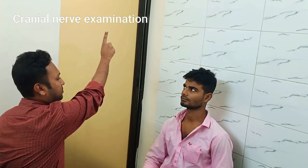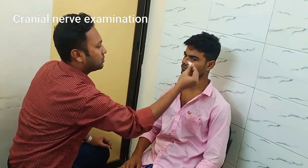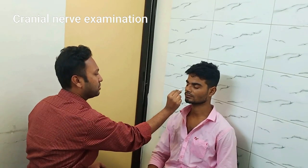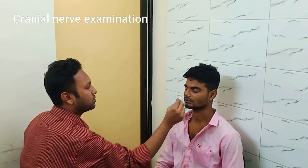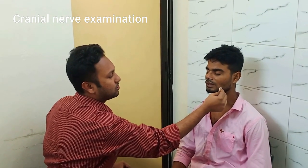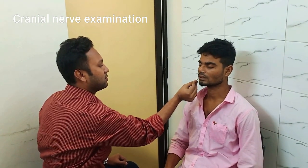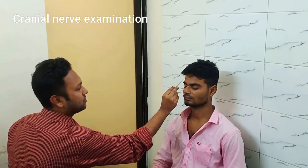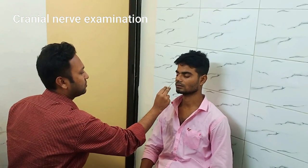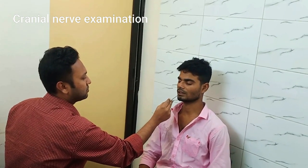This tests for ophthalmoplegia associated with third, fourth, and sixth cranial nerve palsy. Now sensation of the face along the trigeminal nerve distribution is tested — first for fine touch, then for crude touch. The patient is asked if he can feel any sensation or if he notices any reduced sensation at a specific site.